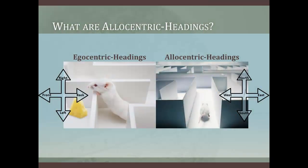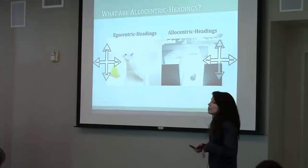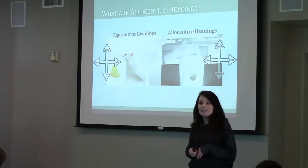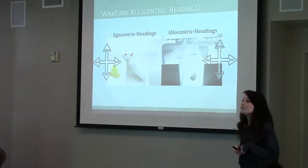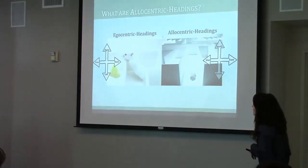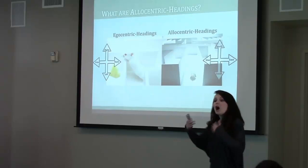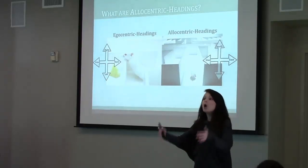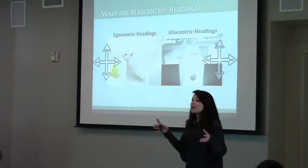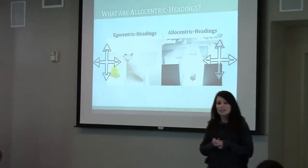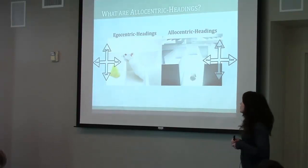As we travel through the environment, or when rats travel through a maze, our facing direction can be coded relative to our body in terms of left, right, front, and back — but it can also be coded relative to the environment, say towards a landmark or away from one. Allocentric headings are facing directions coded relative to the environment, like cardinal directions, and they're coded using head direction cells.